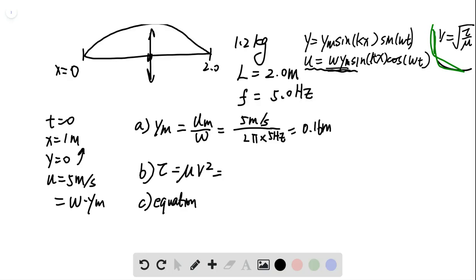How do we find mu over here? We know that it has a mass of 1.2 kilogram and it has a length of 2.0 meter. That is mu.